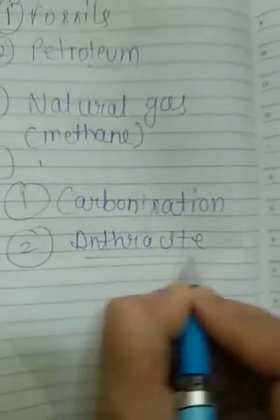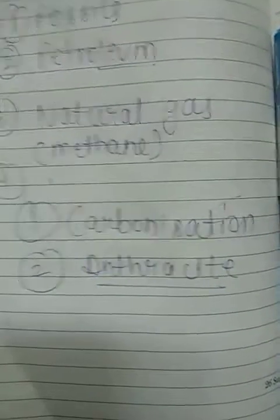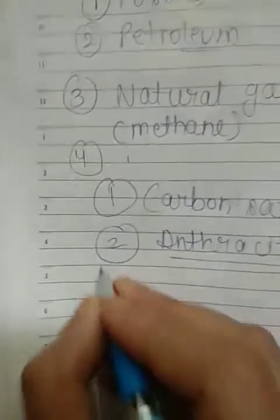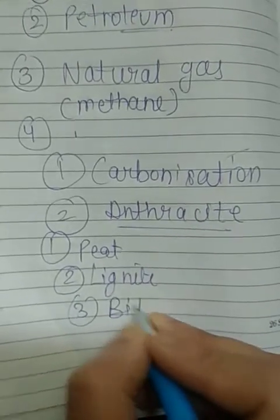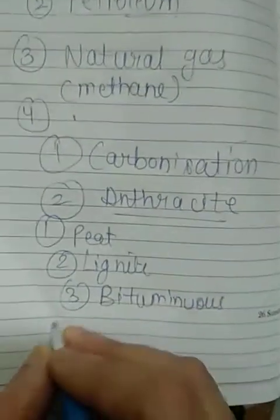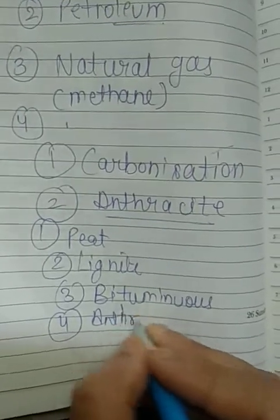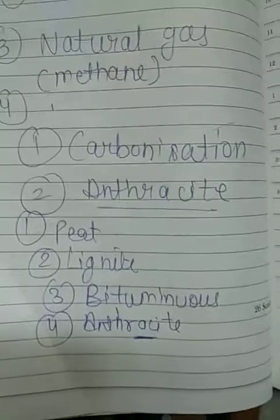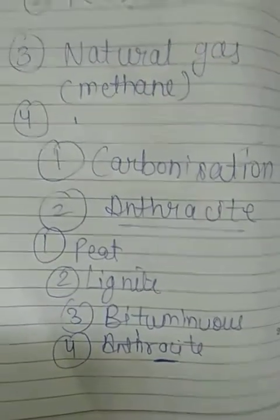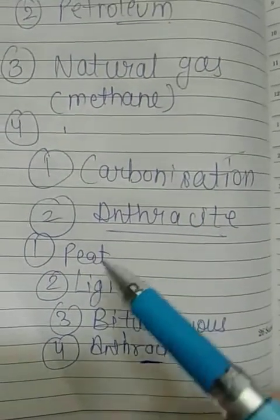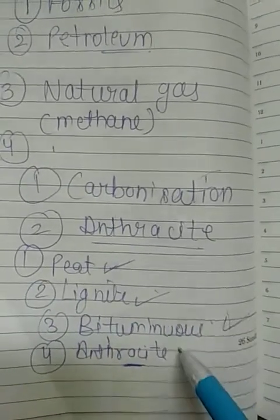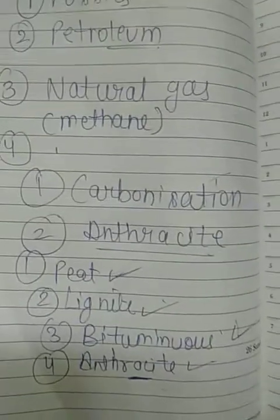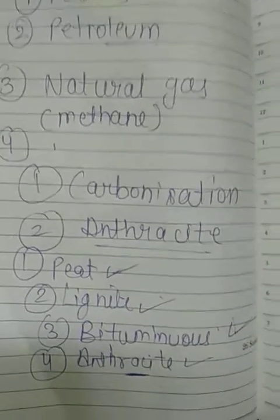An important question is: why is anthracite considered the best variety of coal? In this chapter we study four varieties of coal: peat, lignite, bituminous, and anthracite. Peat is present at the top, followed by lignite, then bituminous, and finally anthracite at the greatest depth. The deeper the variety, the less moisture is present in the coal.